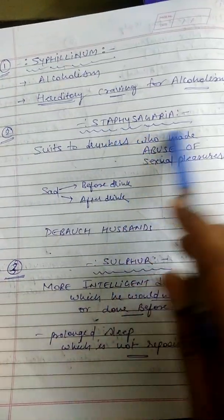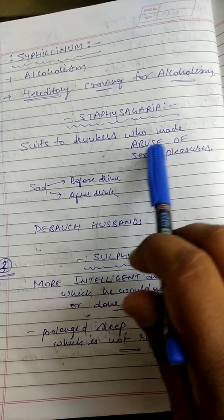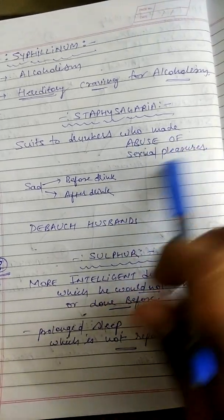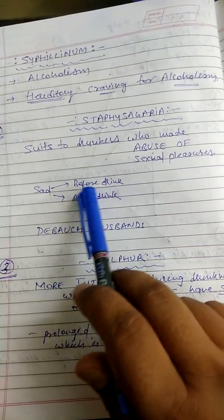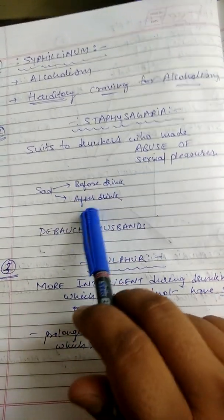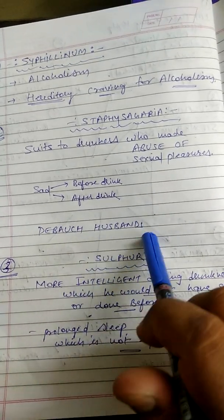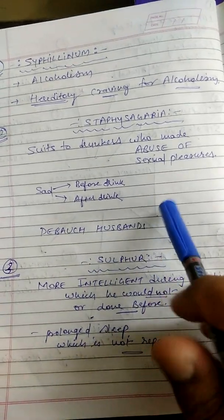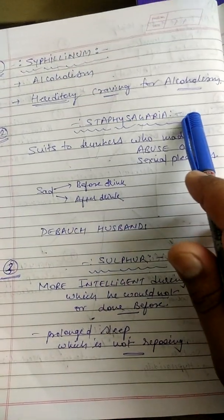Staphysagria — suits drunkards who have abused sexual pleasures. Said before drink, said after drink, or abusive husband. Kaafi acha medicines hai Staphysagria mein.